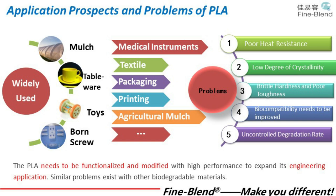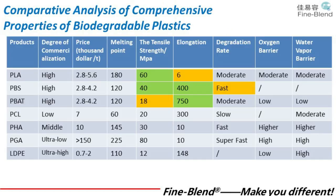We have listed the application fields of degradable materials, which are relatively extensive, but they also have some problems such as poor heat resistance, low crystallinity, and poor brittle toughness. The most common biodegradable plastics show that PBS degrades too fast, PLA has high strength and poor toughness, but PBAT is the opposite, so many enterprises choose to blend them.